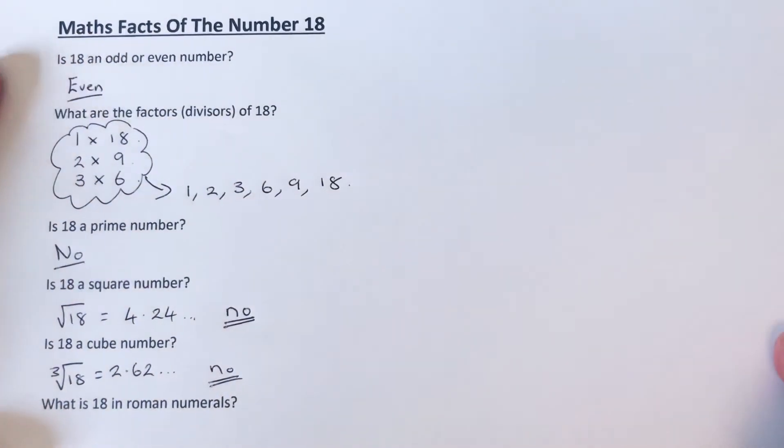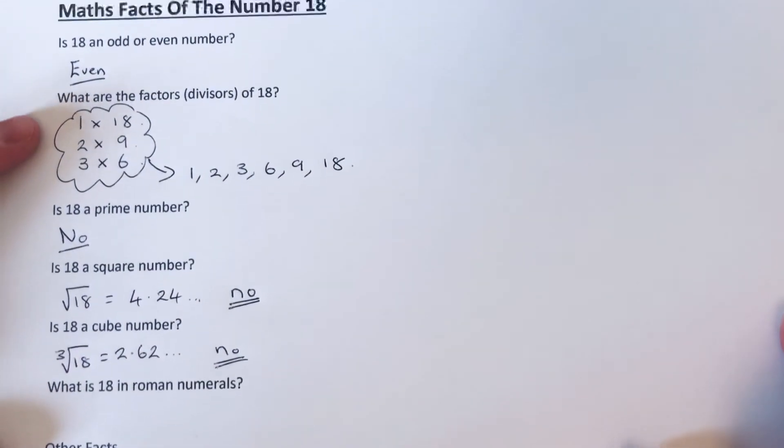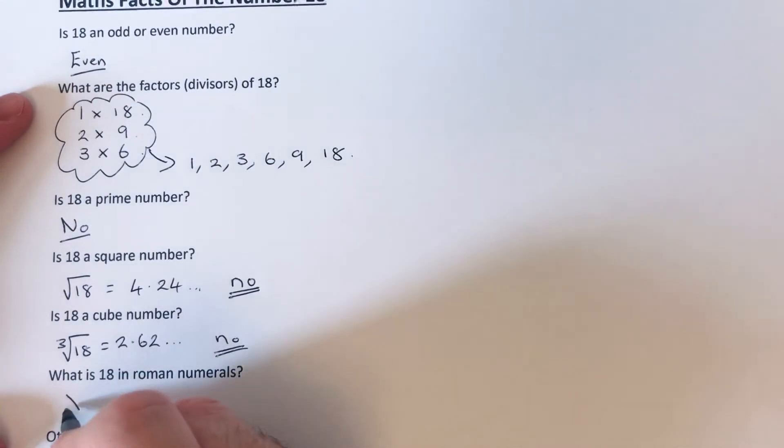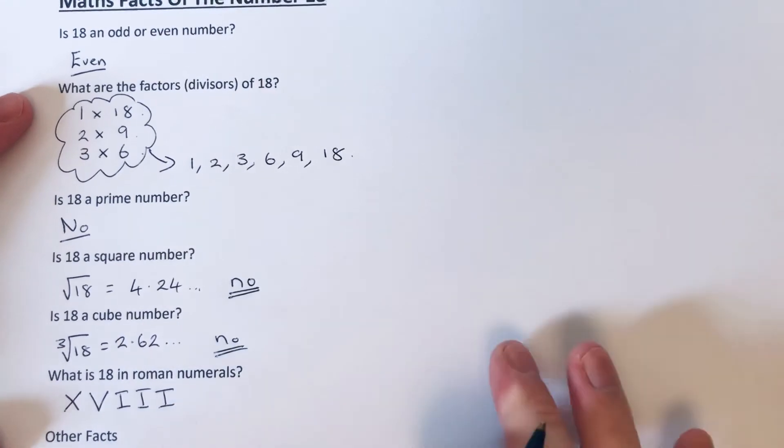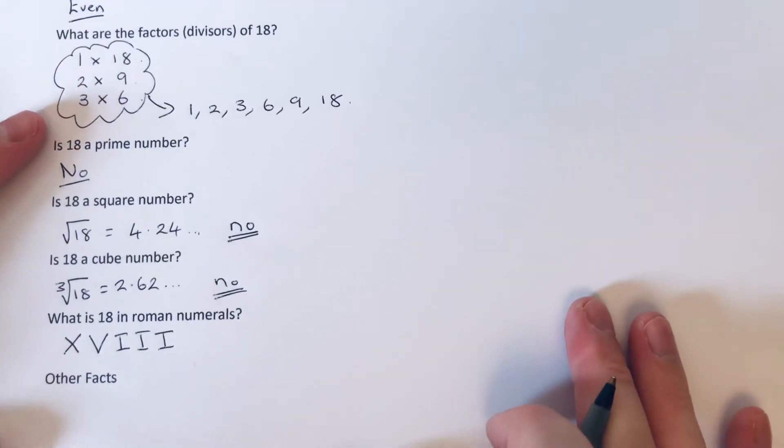What is 18 in Roman numerals? We can do an X for 10, a V for 5, and then we need three I's.